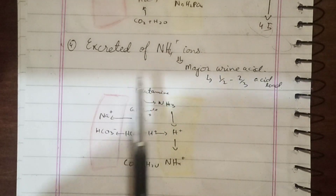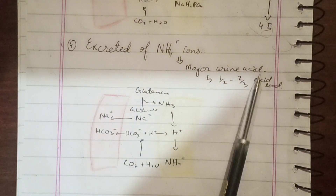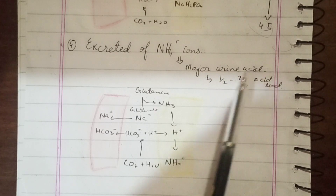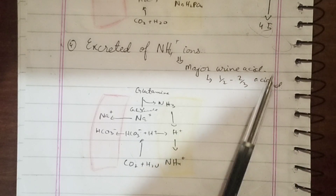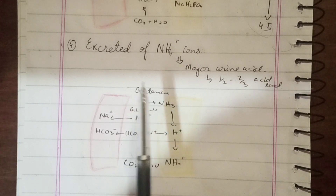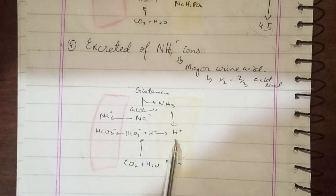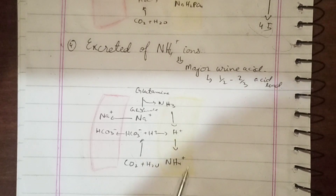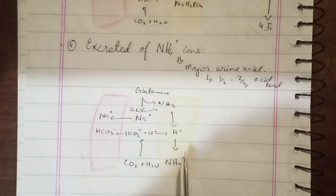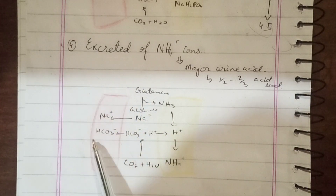Excretion of ammonium is a major urinary acid mechanism, accounting for approximately one-half to two-thirds of the acid load excreted in urine. The enzyme glutaminase acts on glutamine through deamination to produce glutamate and ammonia. The amino group (NH3) reacts with hydrogen ions and is excreted as ammonium ion in the urine, helping maintain blood pH.